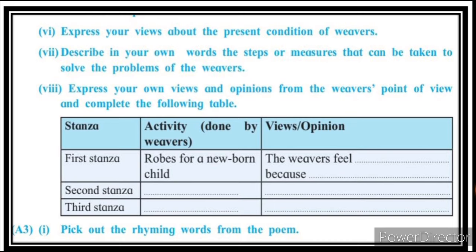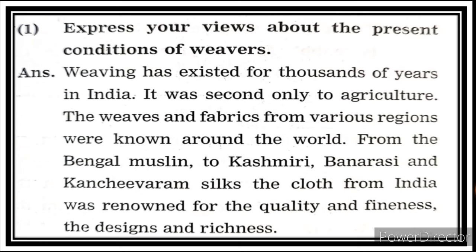Express your views about the present condition of weavers. Describe steps or measures that can be taken to solve the problems of the weavers. Express your own views and opinions from the weaver's point of view and complete the table for the first, second, and third stanzas. Also pick out the rhyming words from the poem.